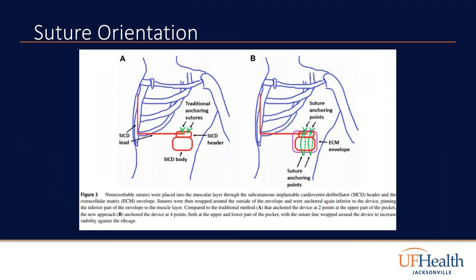You can see here there are two diagrams on the left. In diagram A, the subcutaneous ICD comes with a header that has two holes, essentially, which are traditional anchoring sutures. These traditional anchoring sutures enable one to suture the device superiorly to the muscle.